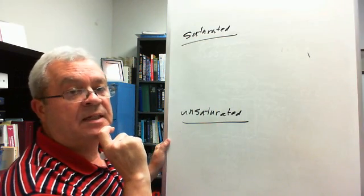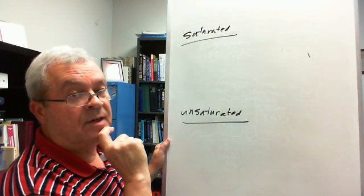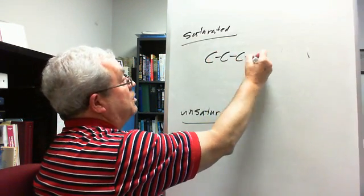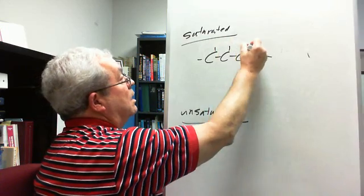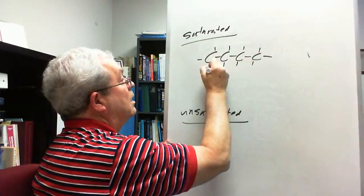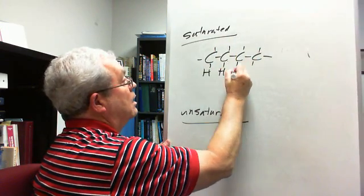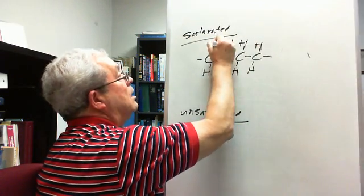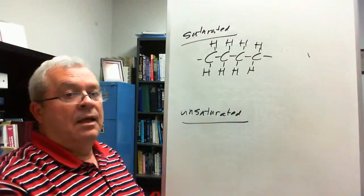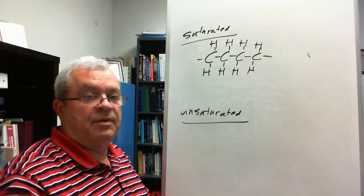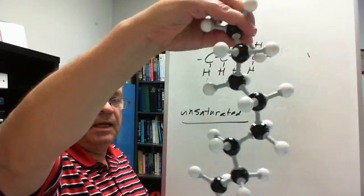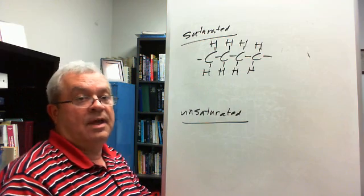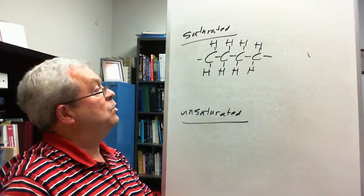And so we can diagram a section of a tail of a saturated lipid like this. Like something we had up here before. And so what does this represent again? A bunch of carbon atoms and a bunch of hydrogen atoms combined kind of like this. And if you were to draw this on your test, you'd make those all capital letters, would you not? Absolutely you would.